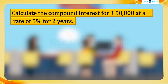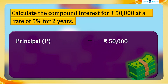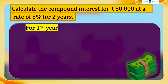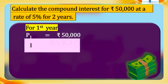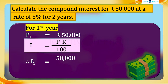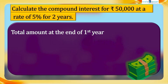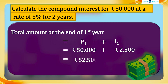Let's see how to calculate compound interest. We have principle P = 50,000 rupees, number of years N = 2, rate of interest R = 5%. For the first year, P1 = 50,000 rupees, and simple interest I1 = P1 × R ÷ 100 = 50,000 × 5 ÷ 100 = 2,500 rupees. The total amount at the end of the first year is P1 + I1 = 50,000 + 2,500 = 52,500 rupees.